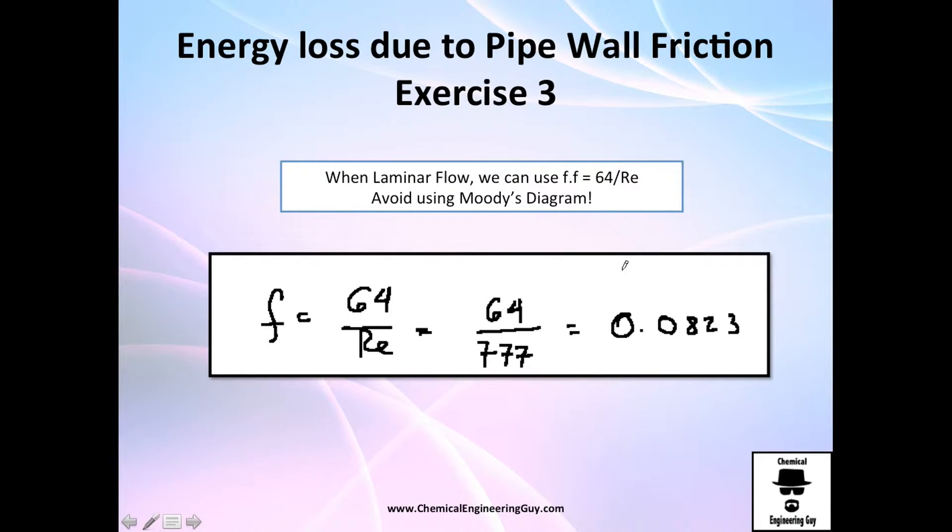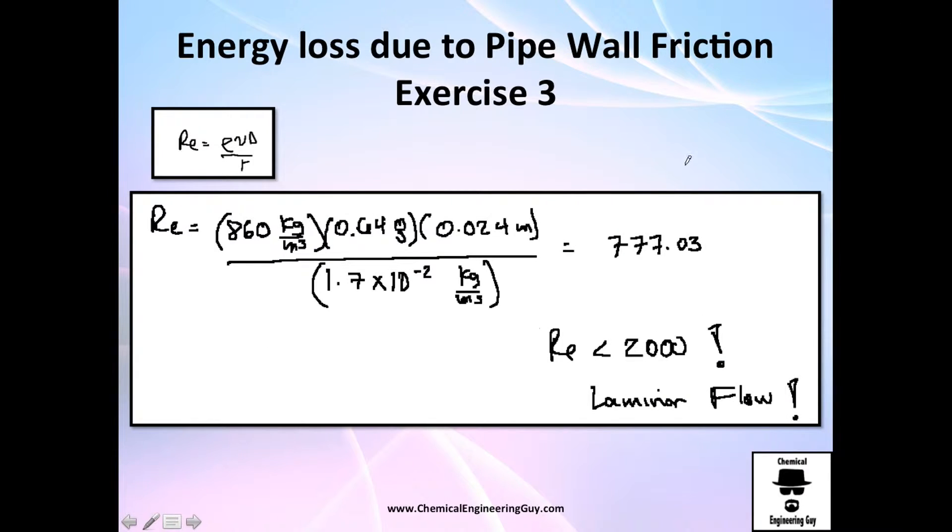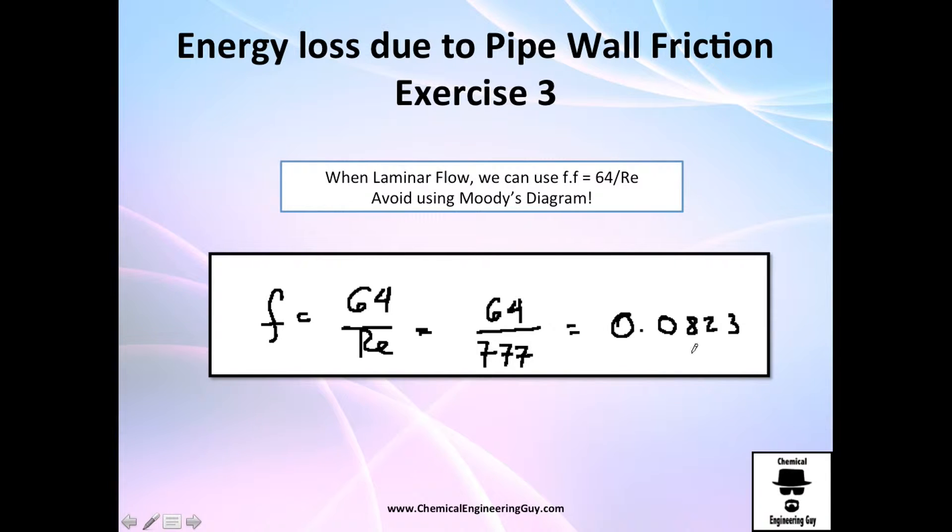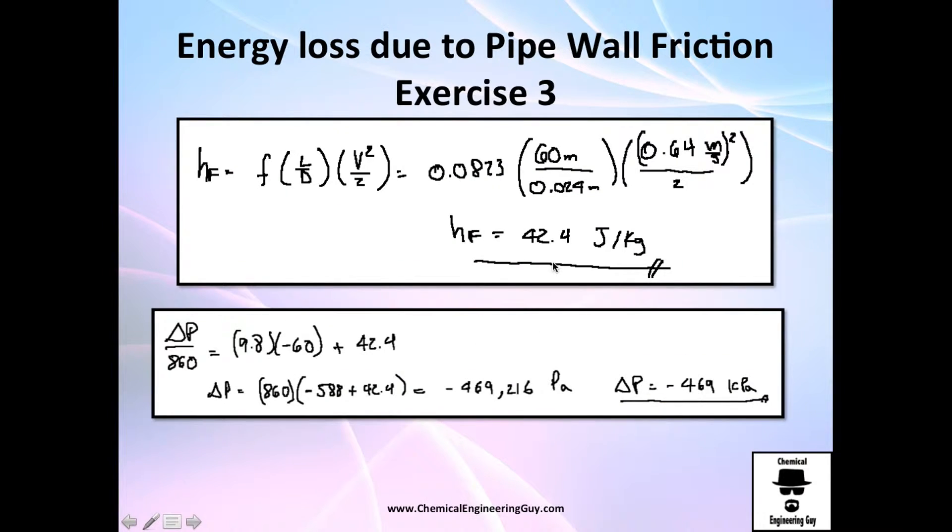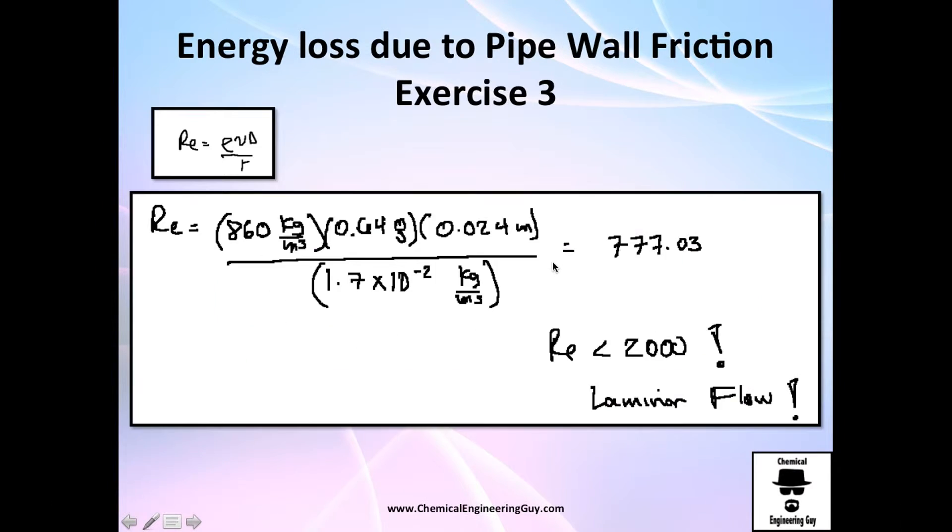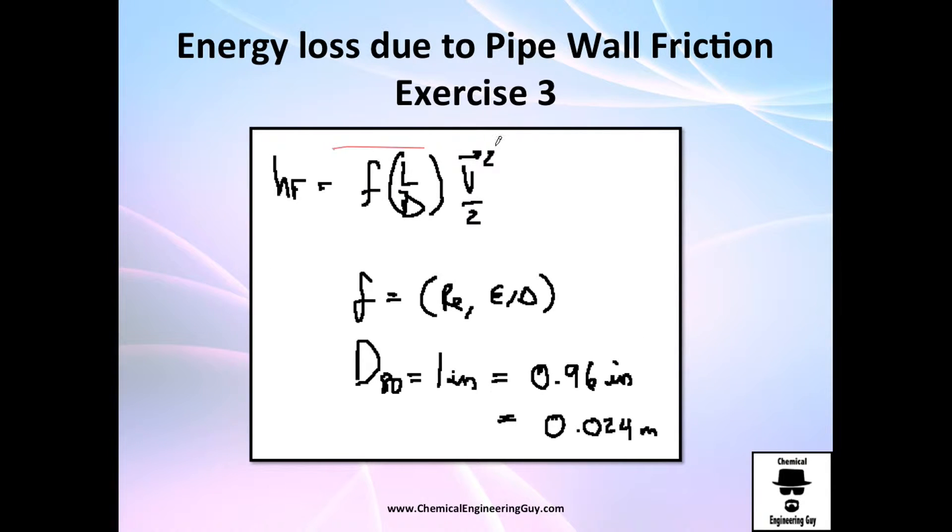So what do we do with laminar flow? We could either go to Moody's diagram but I will definitely recommend you just calculate this friction factor for laminar flow. You can say it's always 64 divided by the Reynolds number. So 64 divided by the Reynolds number we calculated in the previous slide right here and I got this friction factor which is very high and makes sense because petroleum is very viscous, it's very slow and it's laminar flow. In laminar flow we always get high friction factors.